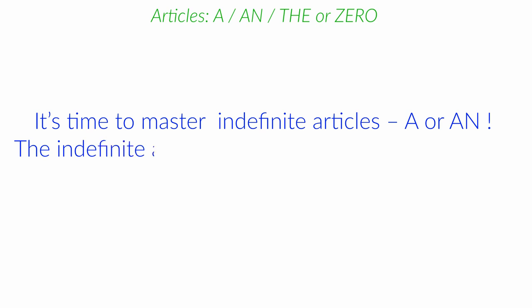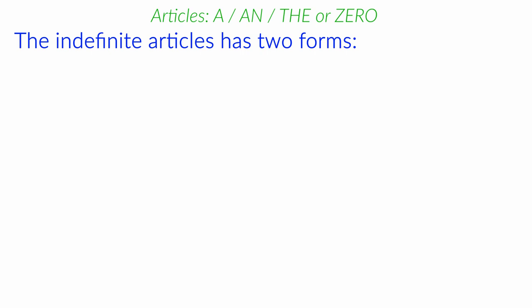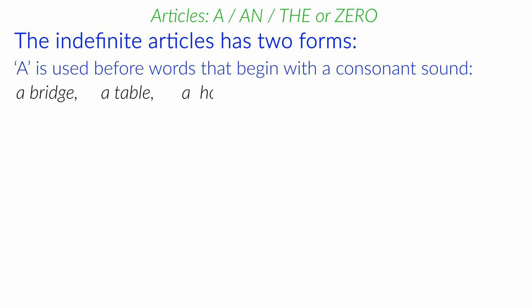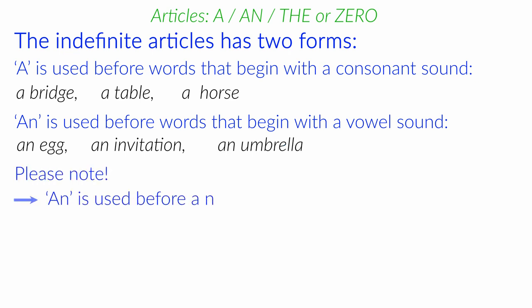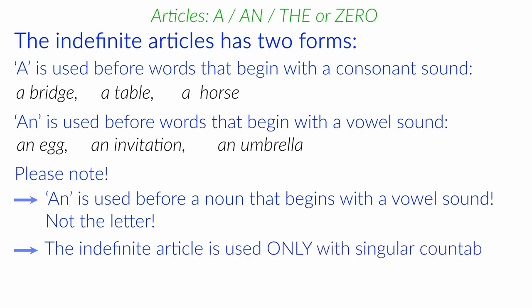Let us move further. Now, it's time to master the indefinite articles. In English grammar, the indefinite article is used only with singular nouns and gives a general concept of a subject. The indefinite article has two forms. A and an. The article A is used for words that begin with a consonant sound. A bridge. A table. A horse. The article An is used before words that begin with a vowel sound. An egg. An invitation. An umbrella. Please note. Article A is used before a noun that begins with a vowel sound, not letter. The indefinite article is used only with singular countable nouns.